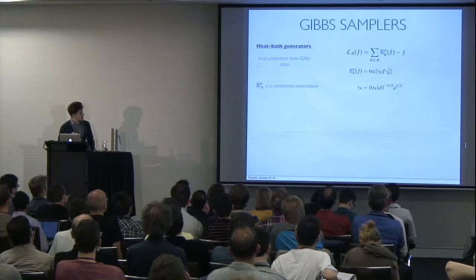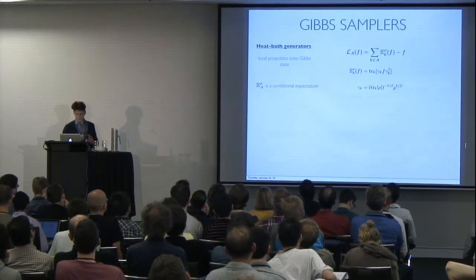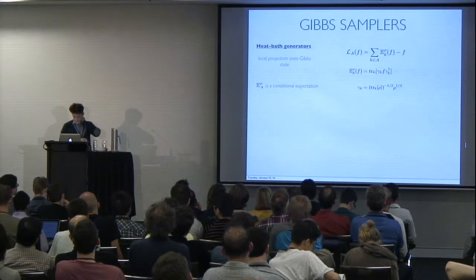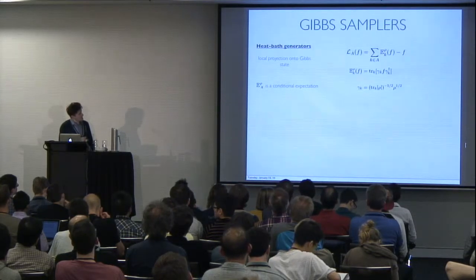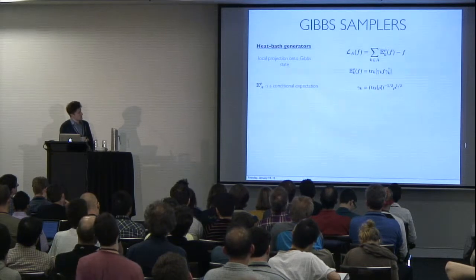The second class of Gibbs samplers is a bit closer to a simulation, and I'll go over it very quickly. The way you can interpret it is that it locally projects onto the Gibbs state.